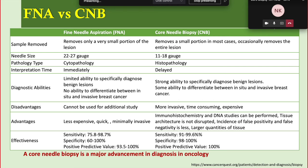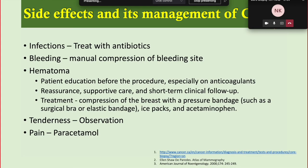FNAC cannot be used for additional studies. Core biopsy blocks can be stored long-term. Core biopsy is more invasive, more time-consuming — patients are usually admitted to daycare — and more expensive. Advantages of FNAC: less expensive, quick, minimally invasive. Advantages of core biopsy: IHC marker assessment, DNA studies, preserved tissue architecture, low false positivity and negativity, larger tissue samples. Core biopsy has higher sensitivity, specificity, and predictive values and represents a major advancement in oncology diagnosis.